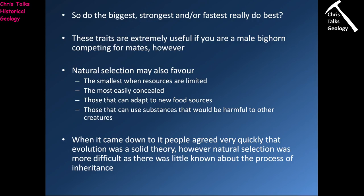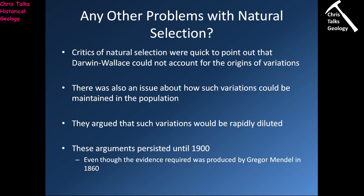When it comes down to it, people agreed fairly quickly that evolution was a solid theory. However, natural selection was more difficult because there was little known about the process of inheritance. We can see in the fossil record and in lab studies that having an advantage makes you more successful and allows you to reproduce more successfully, but the question becomes: how are these traits being passed on from one generation to the next? Critics of natural selection were quick to point out that the Darwin-Wallace model could not account for the origins of variations — where did those variations actually come from in the first place?